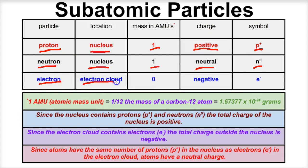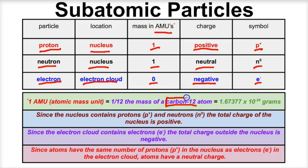Electrons are located in the electron cloud. They are so small compared to protons and neutrons that we say they have no mass at all. The charge of an electron is negative. An AMU is a measurement of mass — AMU stands for atomic mass unit. One atomic mass unit is equal to one twelfth of the mass of a carbon-12 atom. All the atomic masses on the periodic table are based off the carbon-12 atom. One AMU is equal to 1.67377 × 10⁻²⁴ grams.